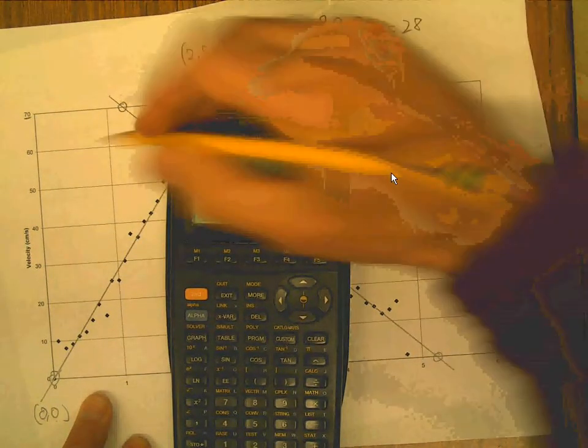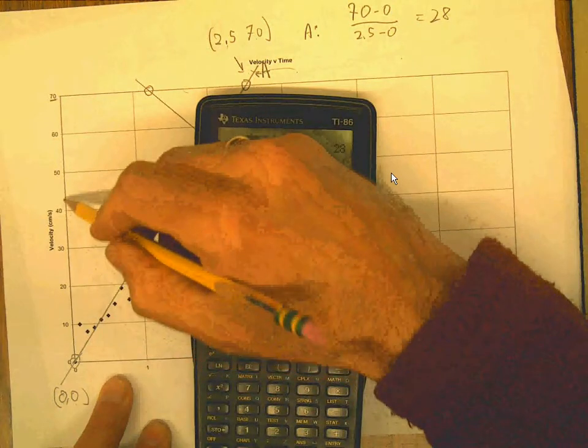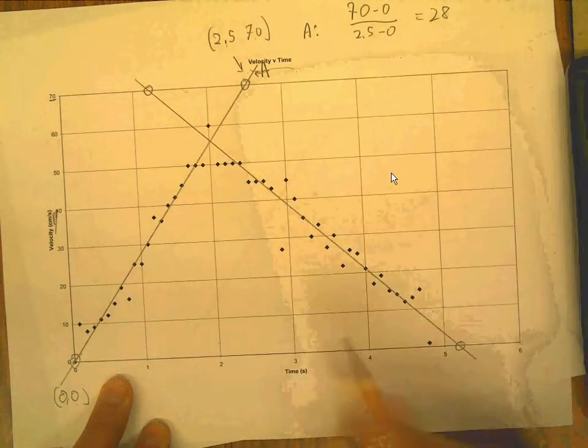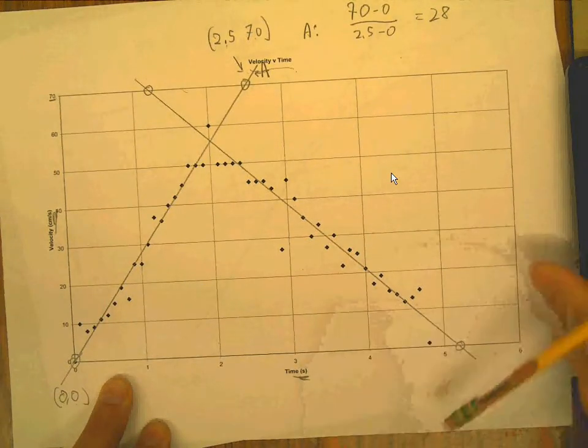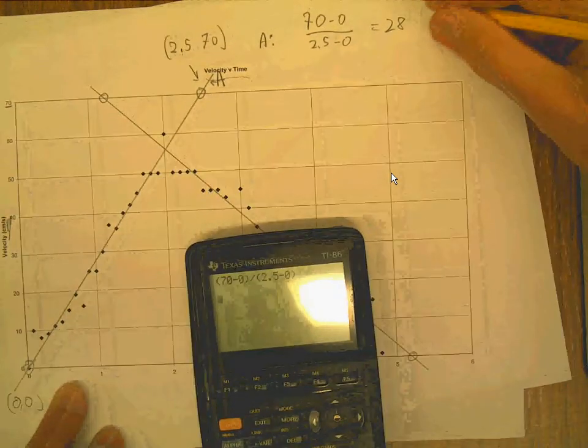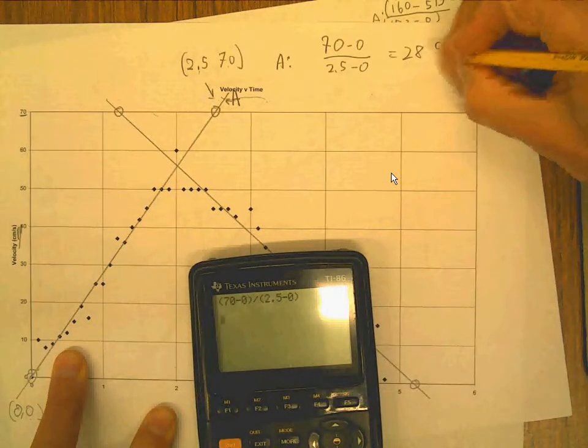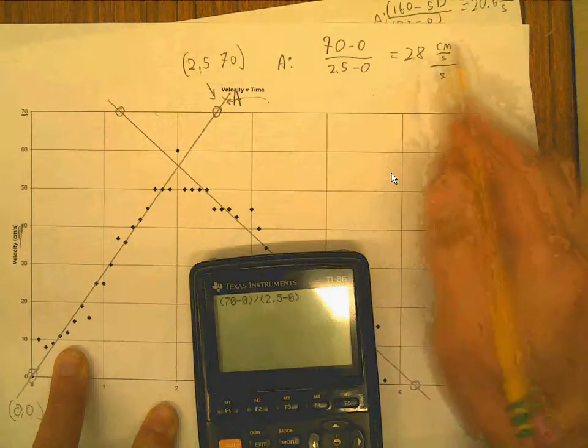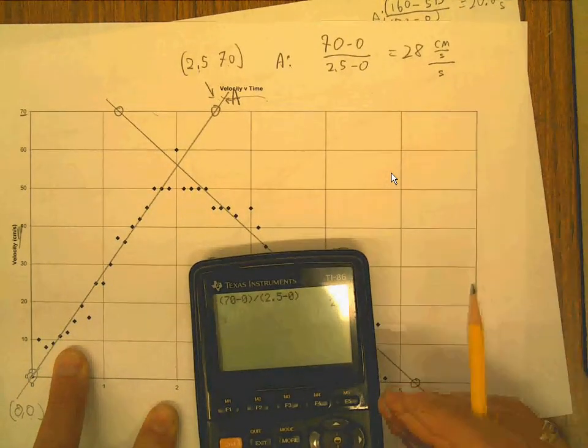And then this axis here is centimeters per second, right? This axis here is seconds, right? So rise over run literally is centimeters per second divided by seconds, right? So it's an acceleration. It's centimeters per second per second.